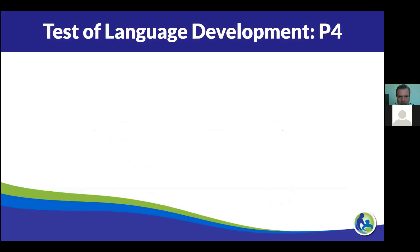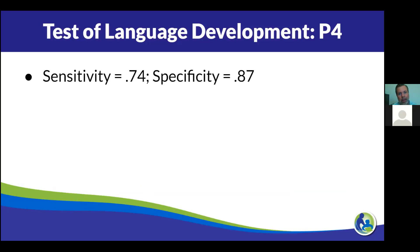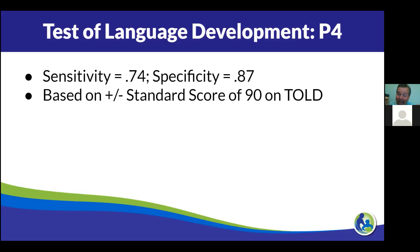As a quick example, I went through the TOLD-P4 manual. They had relatively good sensitivity and specificity — 0.74 to 0.87 — so you're getting it right 75 to 87% of the time. They got those numbers based on whether or not you scored above or below 90. I want to consider many students or children who score an 89, 88, or 87 to have a disorder.